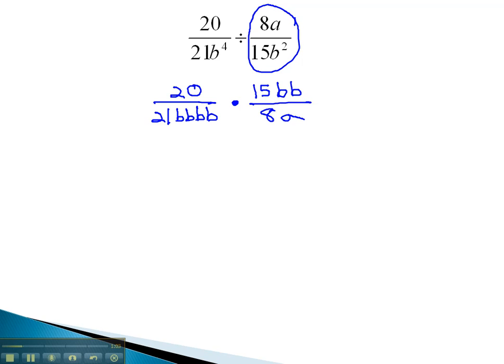Now we can look to see if there's any reducing available. We see 20 and 8 are both divisible by 4. 20 divided by 4 is 5. 8 divided by 4 is 2. We also see 15 and 21, always one number from the numerator, one number from the denominator. They're both divisible by 3. 21 divided by 3 is 7. 15 divided by 3 is 5. We also have a couple b's in the numerator and b's in the denominator. We can divide 1b out with 1b and 1b out with 1b.